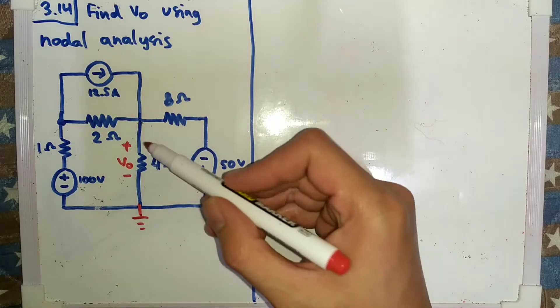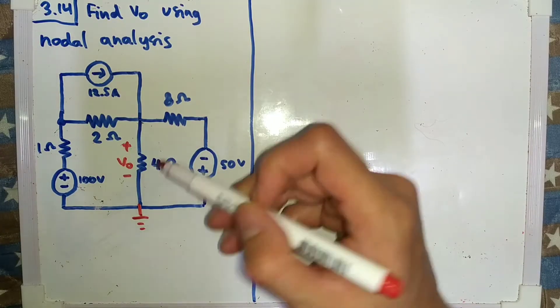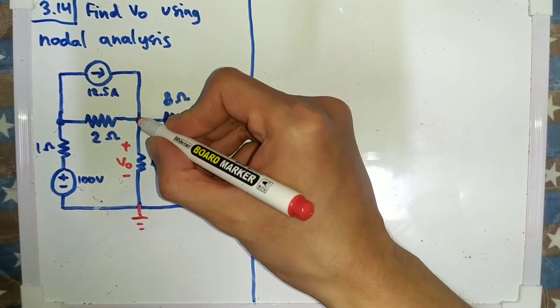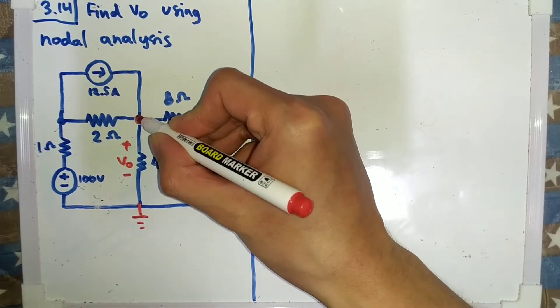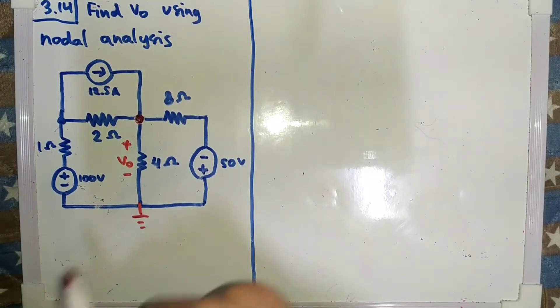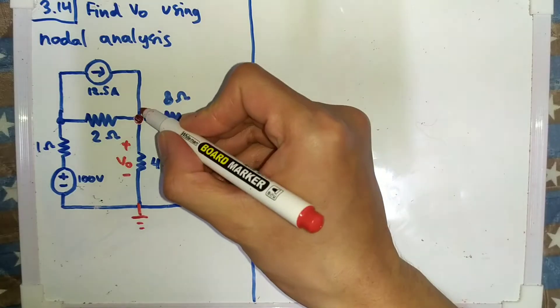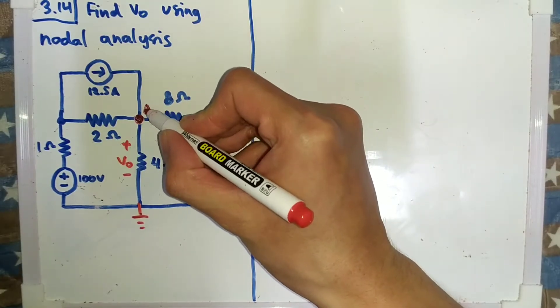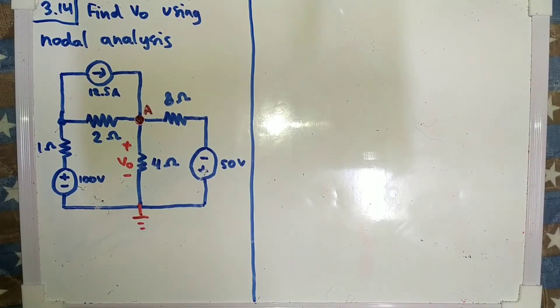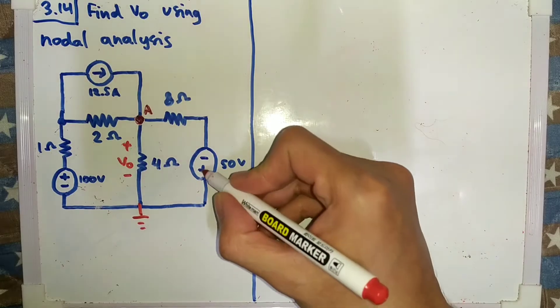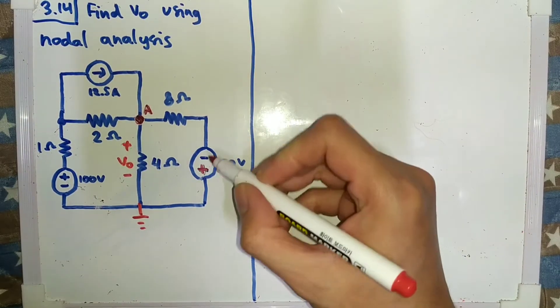First of all we need to find this V0, so naturally I will take the node that's closer to that point. I will name this one as node A and we will work from here. This one is a voltage source.